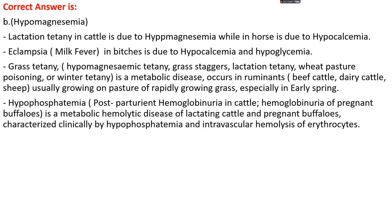Eclampsia, known as milk fever in a bitch, occurs due to hypocalcemia and hypoglycemia, where there is low glucose and calcium level in the blood. Grass tetany, known as hypomagnesemic tetany, grass staggers, lactation tetany, wheat pasture poisoning, or winter tetany, is a metabolic disease that mainly occurs in ruminants usually fed on pastures of rapidly growing grass, especially in early spring seasons.